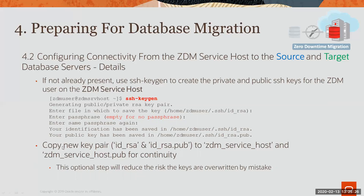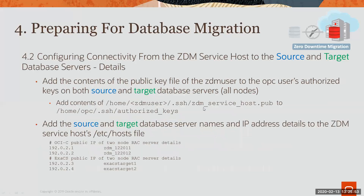It is recommended that you copy your public and private keys — your id_rsa private key and id_rsa.pub — to new file names in order to prevent accidental overwrite by another SSH keygen operation. You will then need to copy the contents of your public key to the authorized_keys file of the OPC users on the source and target database servers.